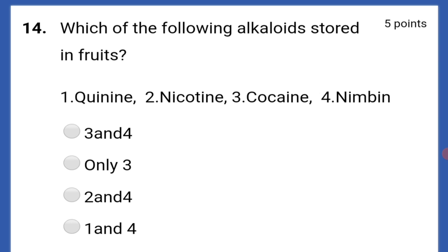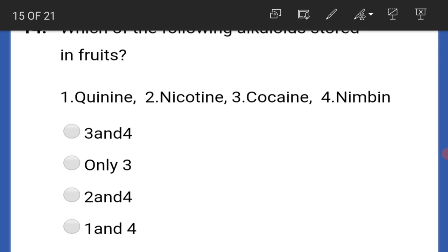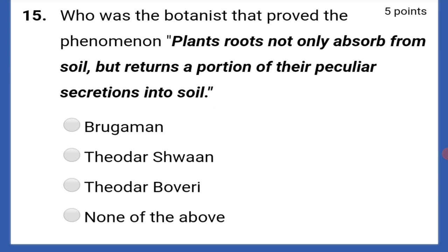Which of the following are secretions in plants? One, two, and three — that is latex, resins, and gums. Which of the following alkaloids are stored in fruits only? That is cocaine — only three.